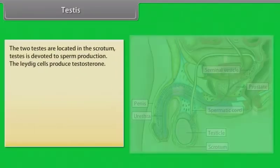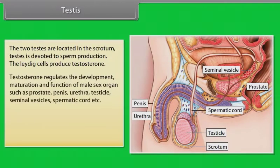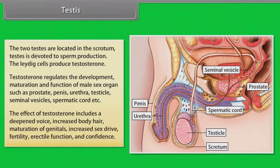The two testes are located in the scrotum and are devoted to sperm production. The Leydig cells produce testosterone, which regulates the development, maturation and function of male sex organs such as the prostate, penis, urethra, testicle, seminal vesicles, and spermatic cord. The effects of testosterone include a deepened voice, increased body hair, maturation of genitals, increased sex drive, fertility, erectile function and confidence.